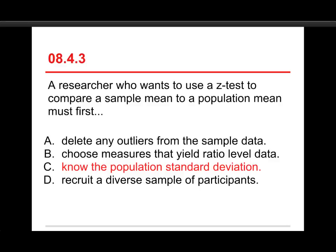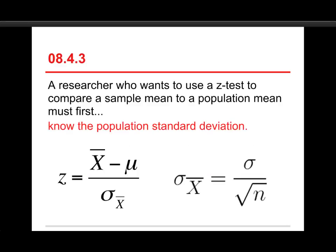But let's talk about this. Outliers can be a problem, but you don't just simply delete them haphazardly, and that doesn't have anything to do with the applicability of the z-test. Choose measures that yield ratio-level data - well, actually, you should have something that yields interval or ratio-level data. And then a diverse sample of participants can be very helpful if you're trying to generalize to a diverse set of people, but that has nothing to do with the relevance of the z-test. Again, take a look at the formula. It's just a z-score for a sample, so we have Z is the sample mean minus the population mean, so that's finding out how far away the two means are, and divided by the standard error, which is the population standard deviation divided by the square root of the sample size. So you have to know the population standard deviation as well as the population mean in order to be able to do this.